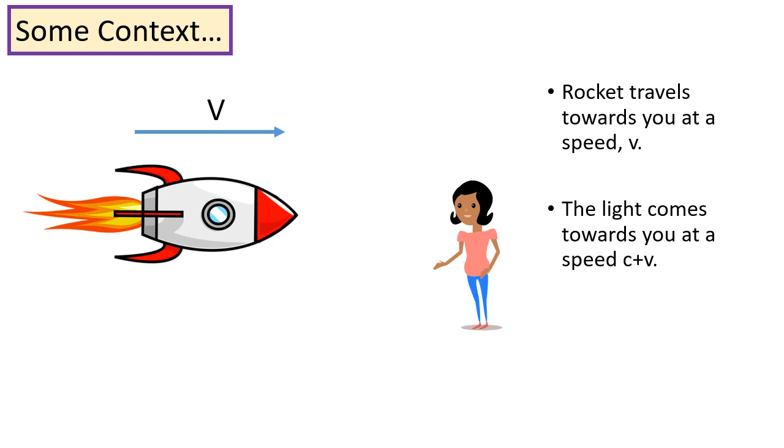However, Maxwell Clarke had said that all observers should measure the same speed of light, c. There was clearly a contradiction here, and the Michelson-Morley experiment was an attempt to resolve this contradiction.